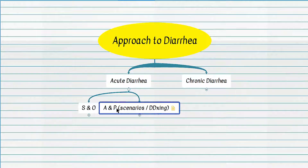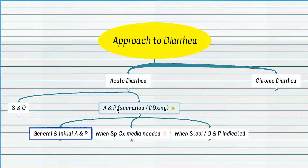The three important decision point questions when approaching any patient with acute diarrhea are: one, initial management options including initial tests and treatment; two, if the patient has any contraindications to antidiarrheal or antibiotic treatment; and three, if the patient needs any special tests such as special culture media or stool for ova and parasites.